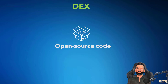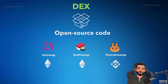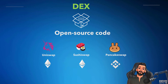DEXs are usually built on open source code, meaning that anyone interested can see exactly how they work. That also means developers can adapt existing code to create new competing projects, which is how Uniswap's code has been adapted by an entire host of DEXs, like SushiSwap, PancakeSwap, and others.